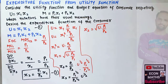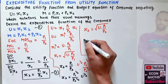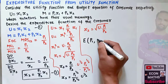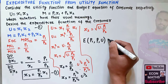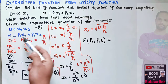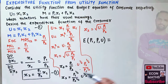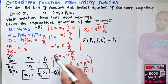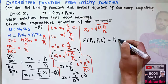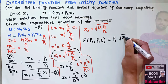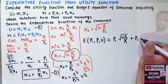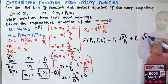After finding demand functions for x1 and x2, we need to derive the expenditure function. The expenditure function is a function of p1, p2, and utility u. We obtain it by plugging the demand functions back into the budget equation: m = p1·√(u·p2/p1) + p2·√(u·p1/p2).